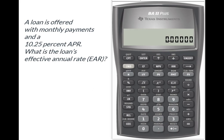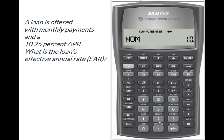I'm going to begin by hitting second and then my interest conversion. The first thing it's going to ask me for is my nominal rate, so that's my APR of 10.25%. I hit enter and then move down in the worksheet.